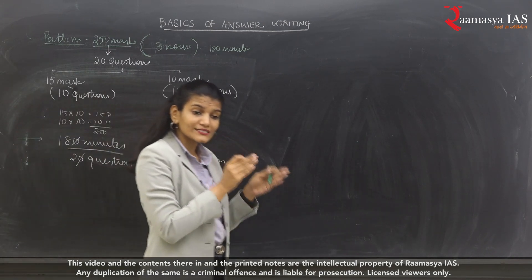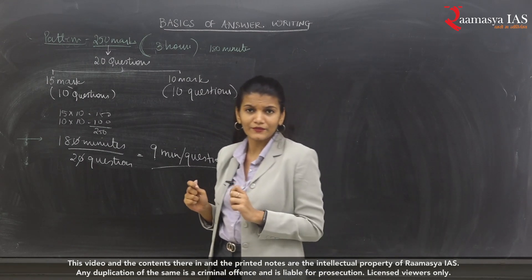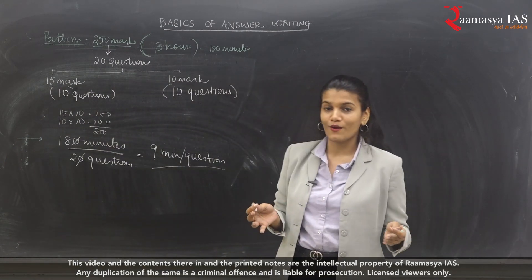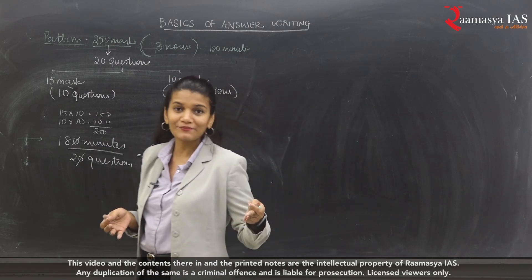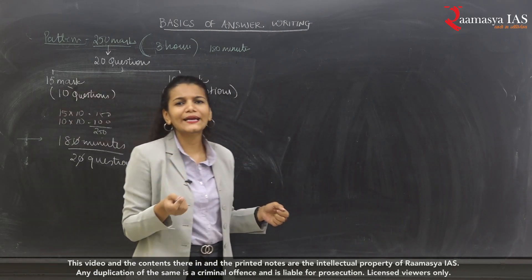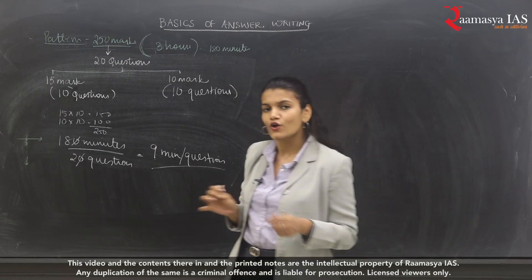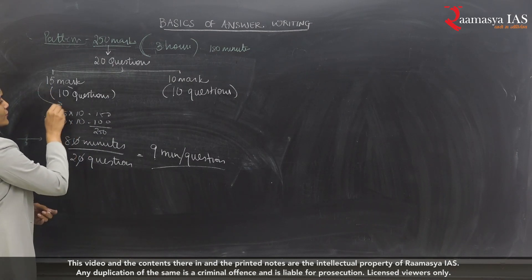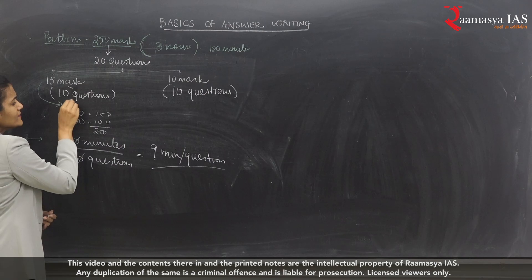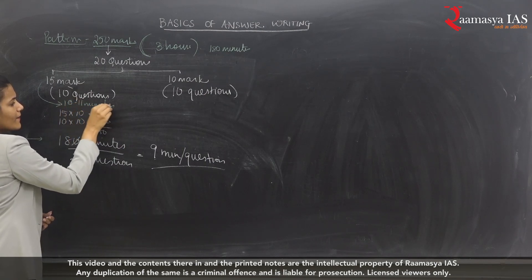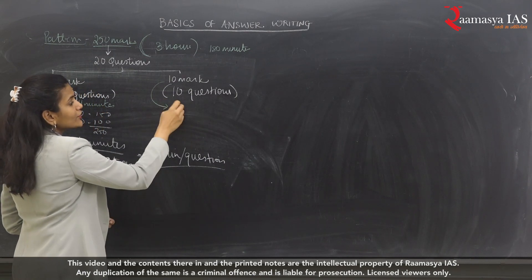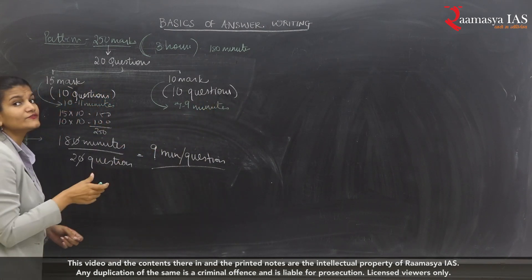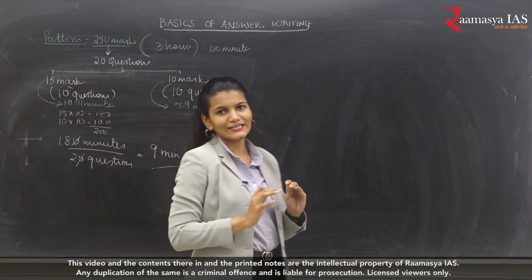Since you have both 10-mark and 15-mark questions, you cannot take exactly 9 minutes per question. You will take maybe less time to solve 10-mark questions, whereas you will take a little more time for 15-mark questions. Generally speaking, for 15-mark questions you should take around 10 to 11 minutes, and for 10-mark questions around 7 to 9 minutes. This is the amount of time you should devote to each question.